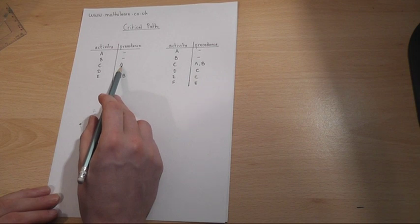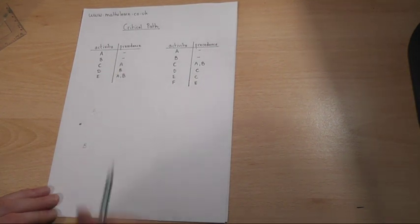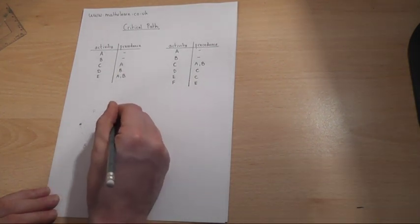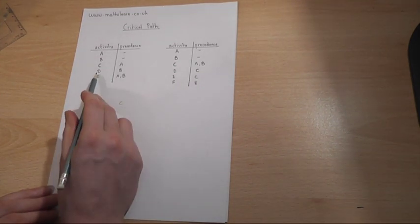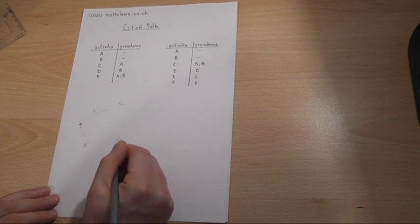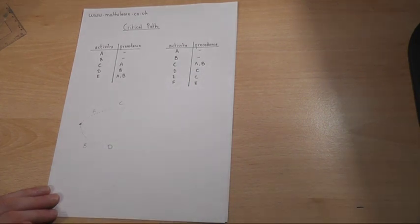Now then, C must come after A, so I put a dotted line after it, label it roughly C, and D comes after B, so I dot this and put D after B.